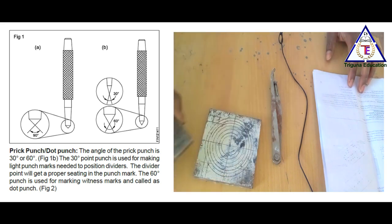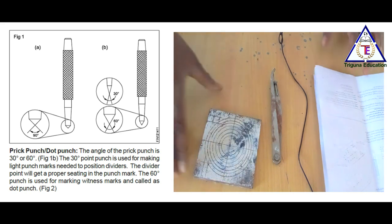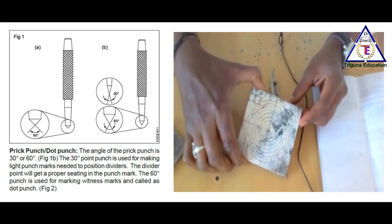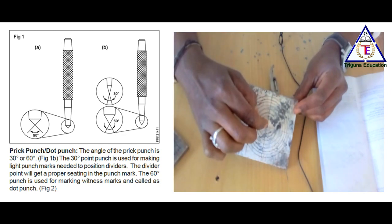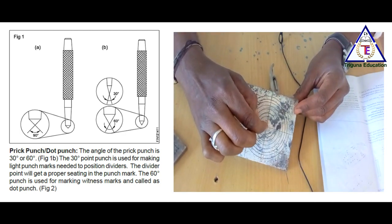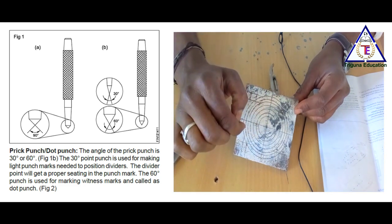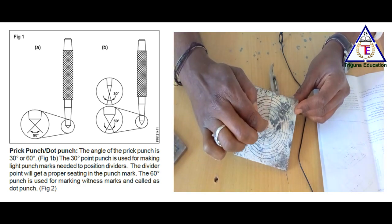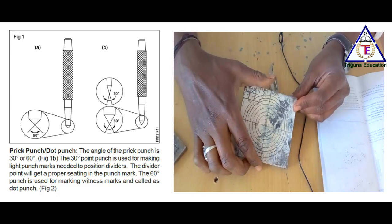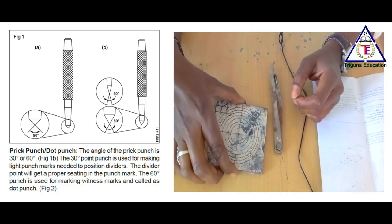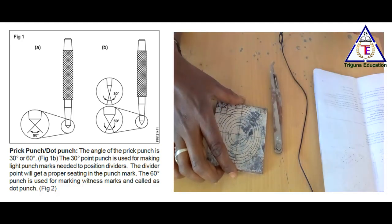If you observe here, we have a punch in the center. This is the center punch. The punch mark gives a good seating for starting the drill.